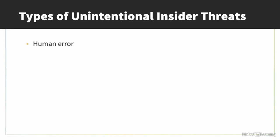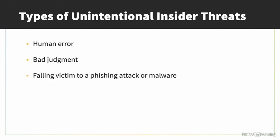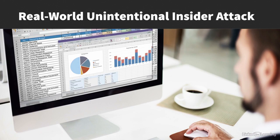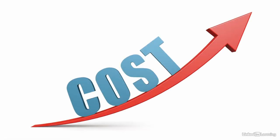Unintentional insider threats include human error, bad judgment, falling victim to a phishing attack or malware, and unintentionally aiding an attacker. An example was an employee who emailed a company spreadsheet to his wife's personal email account to ask for formatting help — the spreadsheet had hidden columns with sensitive employee data, turning his simple email into a major security breach that had to be reported to the state's attorney general and likely cost the company millions of dollars. The Ponemon Institute's research shows that the average cost from insider threats in North American companies is millions of dollars, and the cost is rising every year.